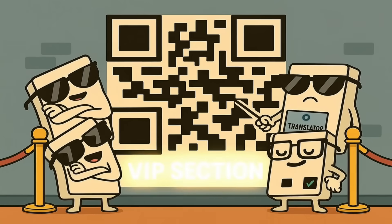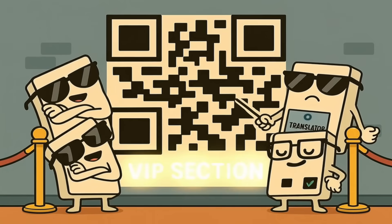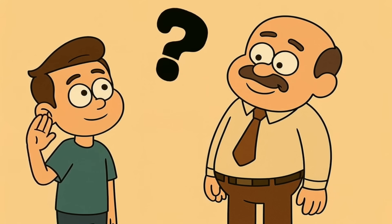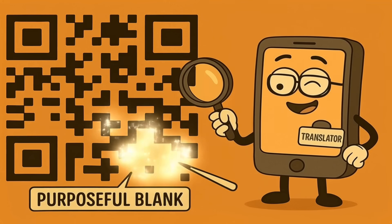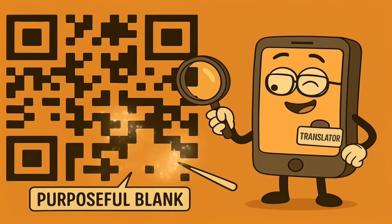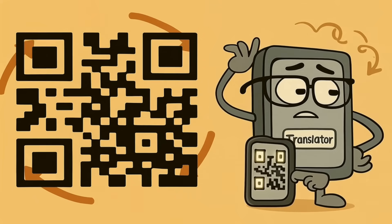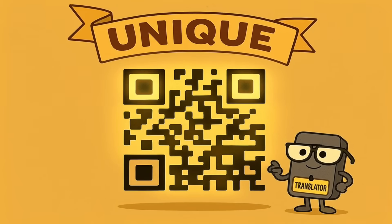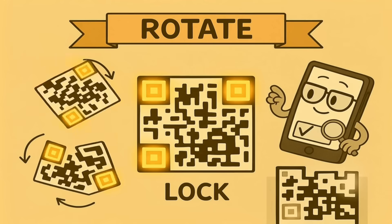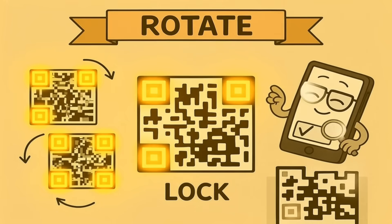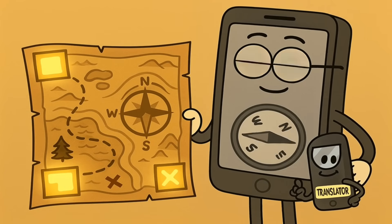Those three squares are like bouncers at a club, telling the camera what's part of the VIP section and what's not. You might be thinking, what about the other corner — the bottom right? Why is it so lonely? Why doesn't it get a big square? The corner is empty on purpose, to help the phone confirm the orientation. If all four corners had a big square, the code would be symmetrical, and your phone might get confused about which way is up. But with one corner missing its big square, the arrangement is unique. There's only one possible way to turn it so that the squares are in the top left, top right, and bottom left positions. It's a foolproof system for telling your phone how to hold the map.